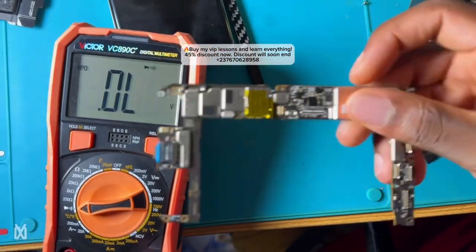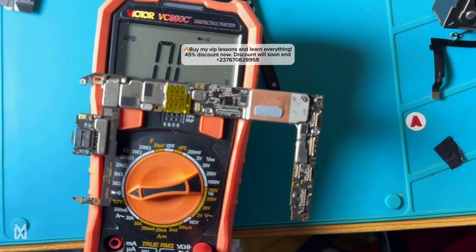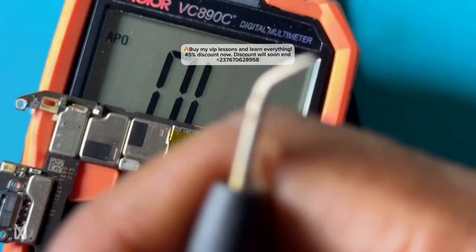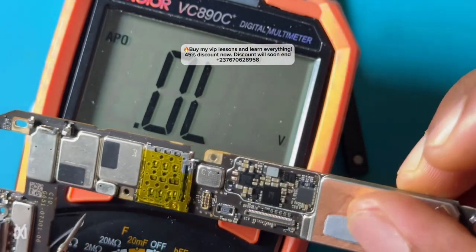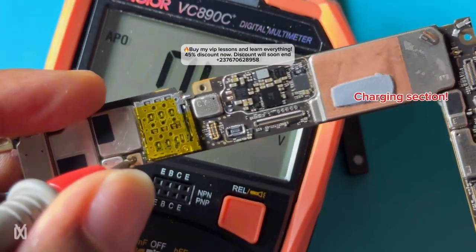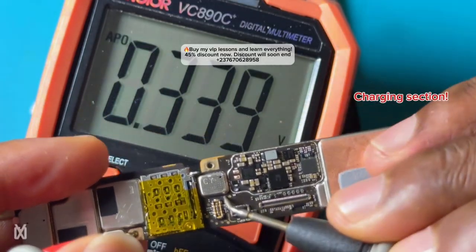This type of short can be caused by ICs—maybe the charging IC or the power IC—or components, and we are going to test that. We have our multimeter set to buzzer mode, our continuity test mode. We'll perform a cold test with the red probe to the ground and the black probe to test the capacitors.